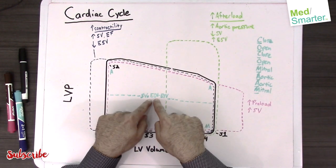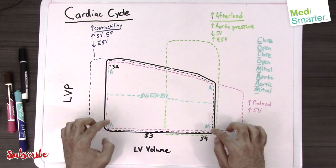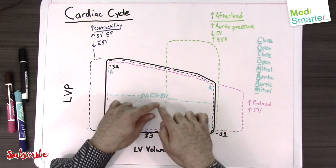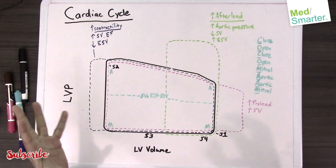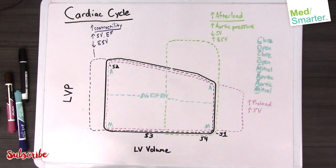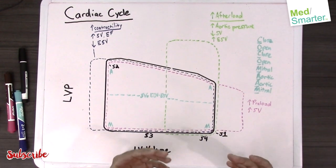Normally we have a nice wide graph, so we're filling up the heart nicely and we're also contracting and getting all of that blood out nicely. But in increased afterload, you can see why that would be reduced, visually represented here.